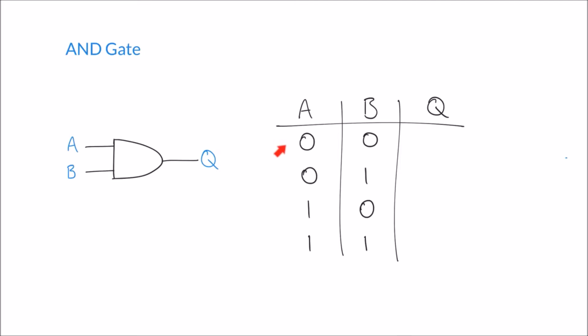The way that an AND gate works, well the clue is in the name: for there to be an output Q, we have to have an input from A and B. So what we see on the right hand side here in our truth table is that the only instance where we'll get a value of one for Q is when A and B are one.